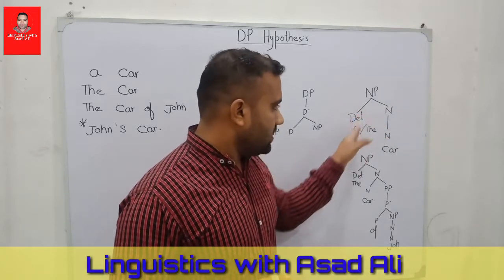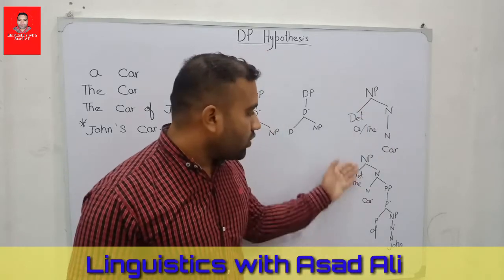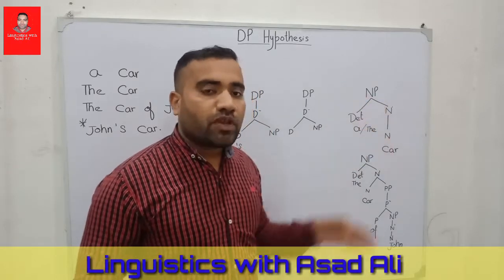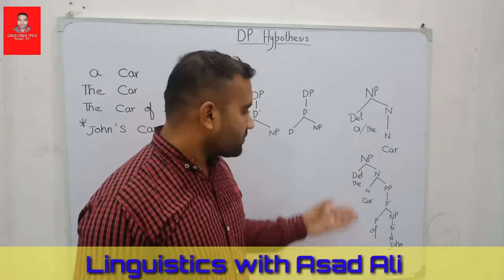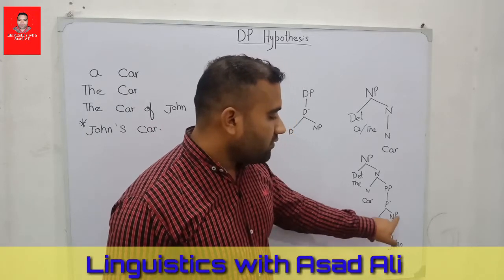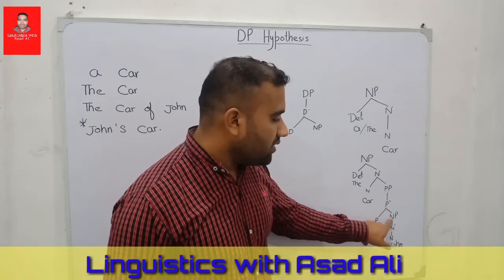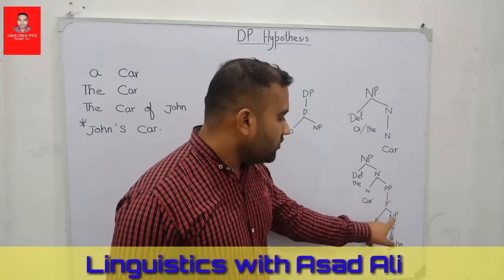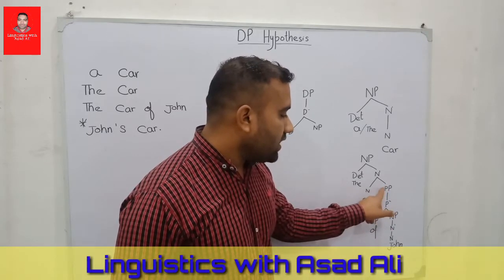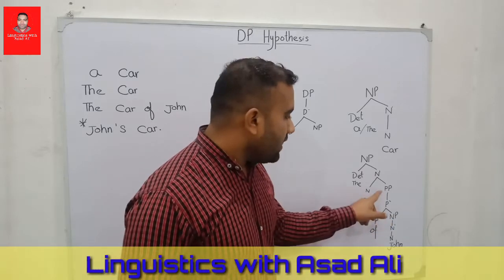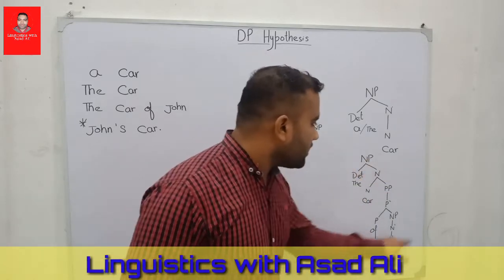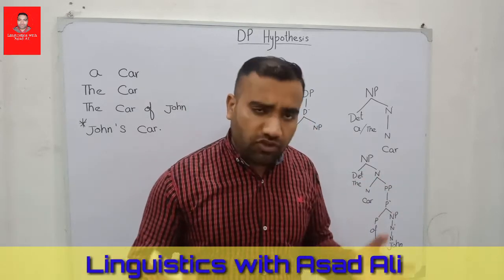We have the head word noun 'car', the intermediate projection N-bar, and NP takes N-bar as a complement. Our structure will look like this. If we say 'the car of John', our previous analysis of NP will fulfill this example too. 'Car' is the head and this is projected within the three levels: minimal, intermediate, and maximal. This NP is taken as a complement by the preposition 'of', and this fulfills the three projection levels, constructing the structure of NP.